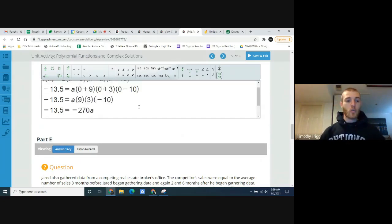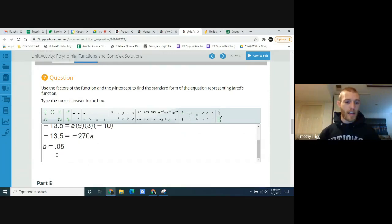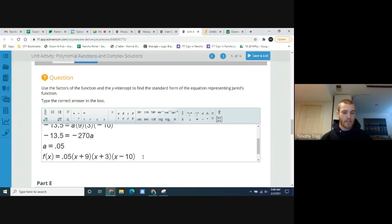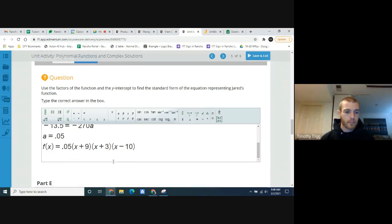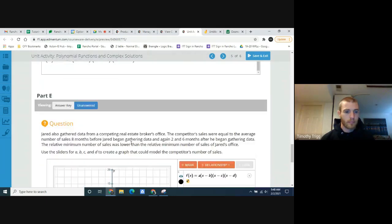Then from there, we can have our total equation, because our equation was this. f of x equals a, x plus 9, times x plus 3, times x minus 10. Now we have a value for a. a is 0.05. I'll just replace a with that, and that gives us our function.